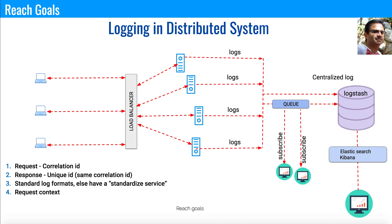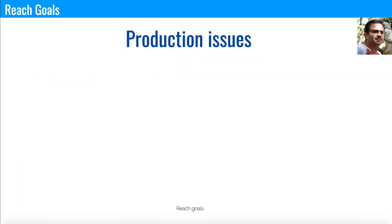The fourth point is request context. The request context should contain all relevant information: date/time, stack errors, service name, IP address, HTTP code, etc. Having this context makes it easy to find the message you're looking for and to index the log files. The fifth point is that logs should be searchable — if you have all this information in key-value pair format, it's very easy to search and retrieve relevant information.